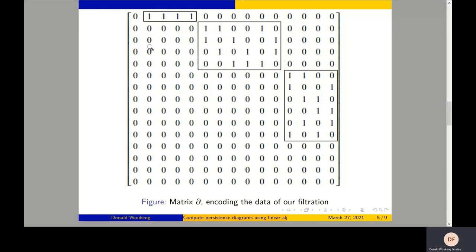For example, the lowest one of a column will be one if the index of that row is one and it is the lowest. For another column, the lowest one might be at row index four, so low of that column equals four. Here, since I have the lowest one at index one and another column also has lowest one at index one, I add the left column to the right column. My coefficients are in Z2, so when I add one to one I get zero, and that entry disappears.